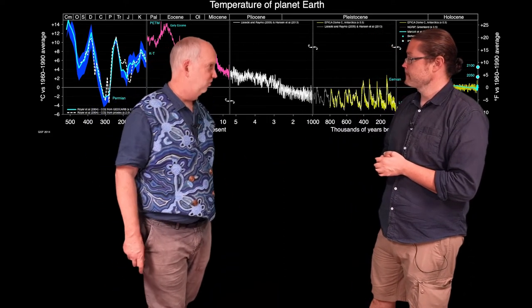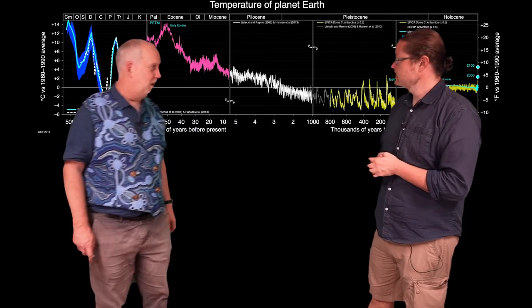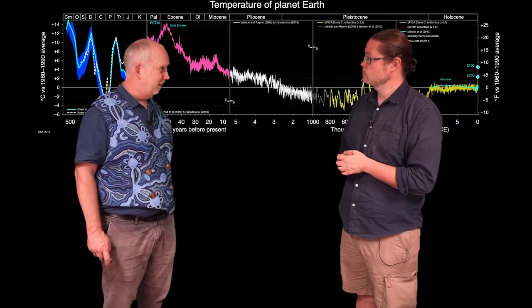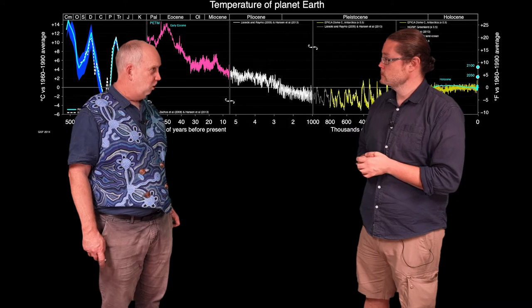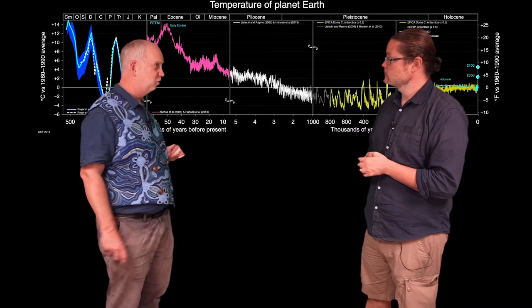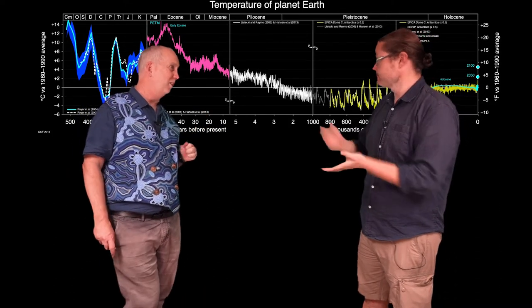Then for the last few million years, we've had a series of ice ages. And right now we're in between ice ages and a bit warmer, but the Earth is nonetheless pretty cold at the moment compared to what it's been in the past, despite the fact the Sun back then was weaker than it is now.